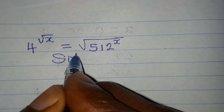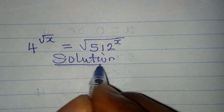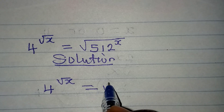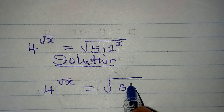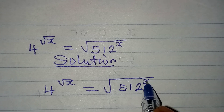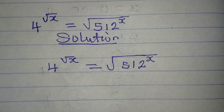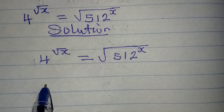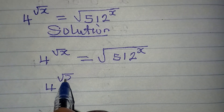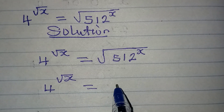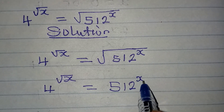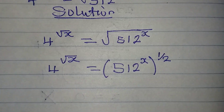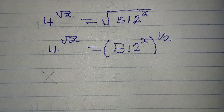Hello everyone, let's provide the solution to this problem. We have 4 to the power of square root of x equal to square root of 512 to the power of x. This looks complicated, but if you know what you're going to do, it is not. We have 4 to the power root x equal to 512 to the power of x, and then the whole of this is to the power of 1 over 2 because of the square roots.